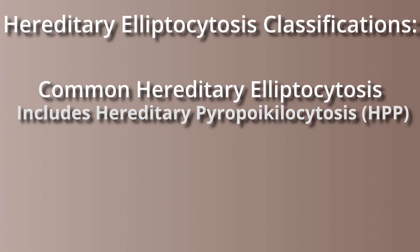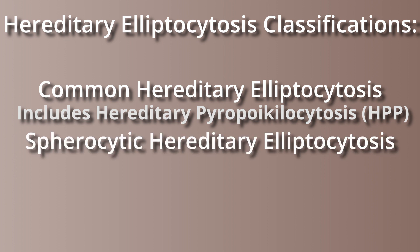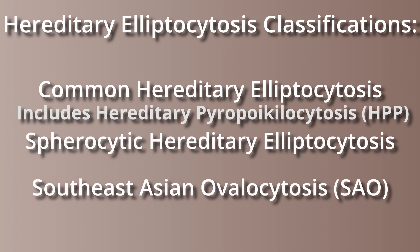Also like me, you may have thought that it was a singular disease, but in reality it is a group of disorders with three classifications based on red cell morphology. They are common HE, which includes hereditary pyropoikilocytosis or HPP, spherocytic HE, and Southeast Asian ovalocytosis or SAO.